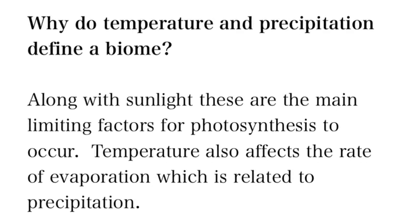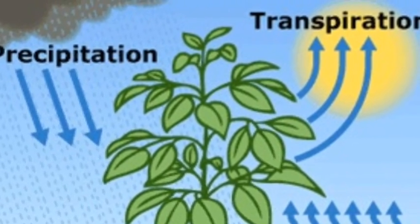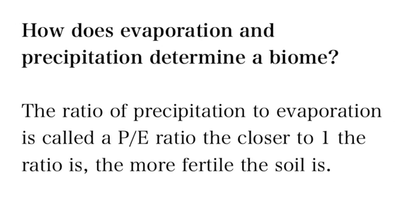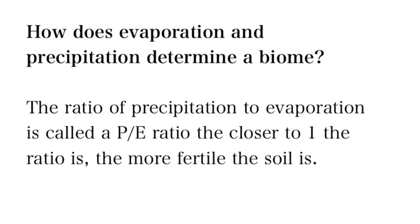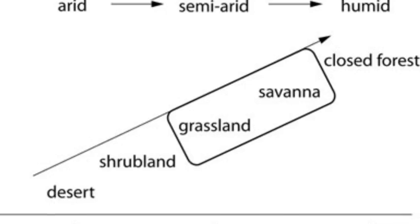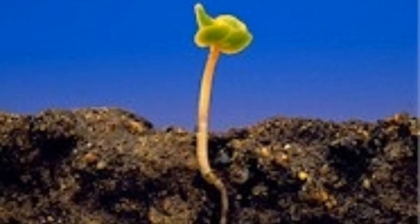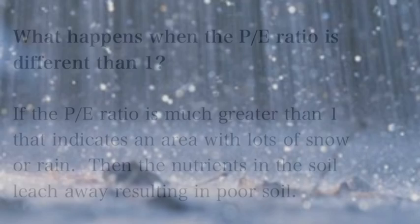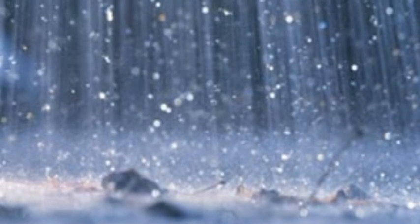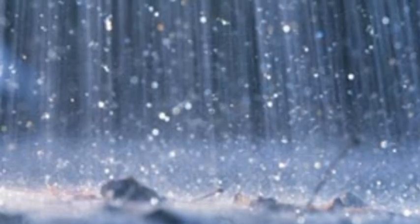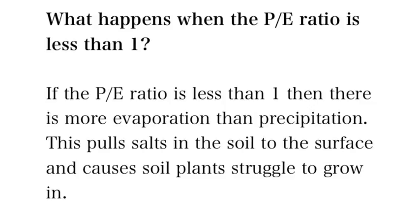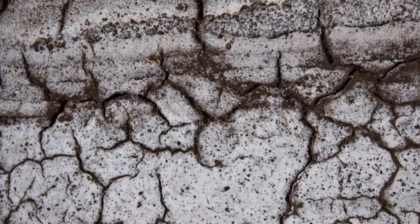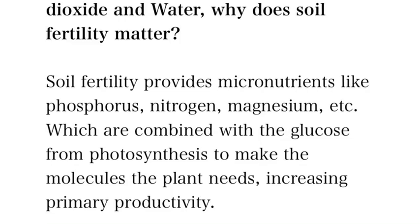So why do temperature and precipitation define an ecosystem? Because they are the main factors that define photosynthesis. Temperature also really affects evaporation. Evaporation and precipitation together make the P-E ratio — precipitation divided by evaporation. The closer to one that ratio is, the more good soil you have, which allows for more growth. Grassland and savanna have it close to one. When the ratio is greater than one, you have a lot of rain and snow, which causes nutrients to go deep in the soil — only things with deep roots like trees can grow there. But if the ratio is above one on the evaporation side, it pulls salts in the soil to the surface and almost kills all plant growth, which is your whole problem in deserts.